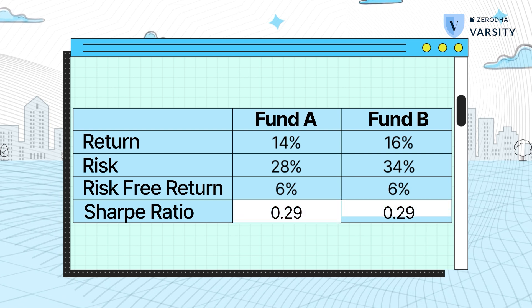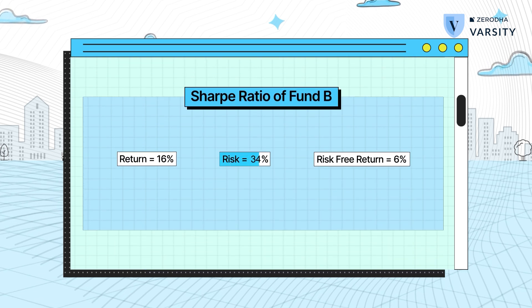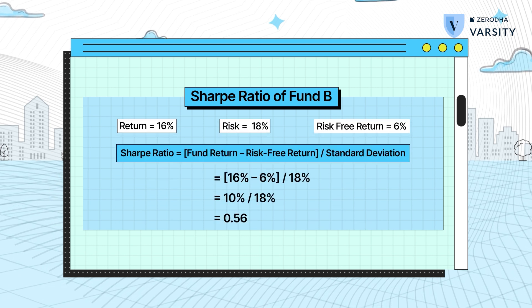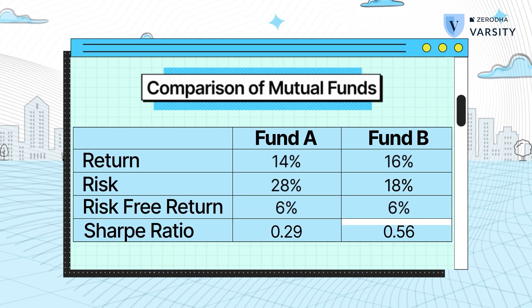Now let's change the standard deviation of Fund B from 34% to 18% and reapply the Sharpe Ratio formula. As you can see, the Sharpe Ratio is now bumped up to 0.5, which means that for every unit of risk the fund takes, the return is 0.56 higher than the risk-free rate — which obviously is very good. Do note that Sharpe Ratio only considers price-based risk. It does not consider credit risk, default risk, and all the other risks applicable to a debt fund, which implies you should use Sharpe Ratio only for an equity fund and not for a debt fund.